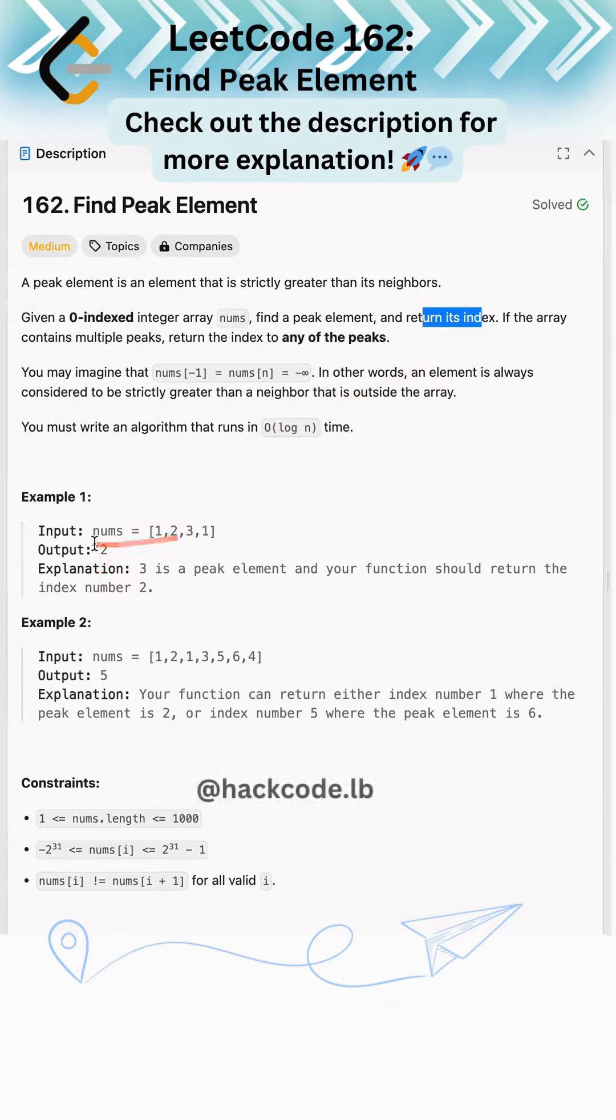Looking at the example array, the output is 2 because 3 is greater than 2 and 1. Basically, 3 is greater than its neighbors, so the output is 2.